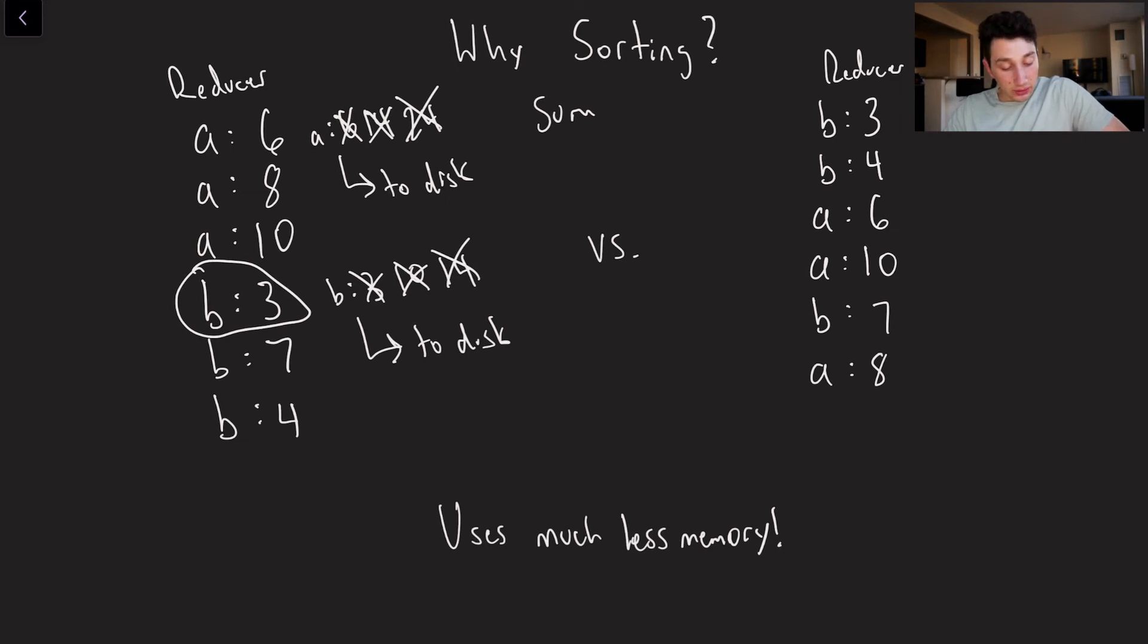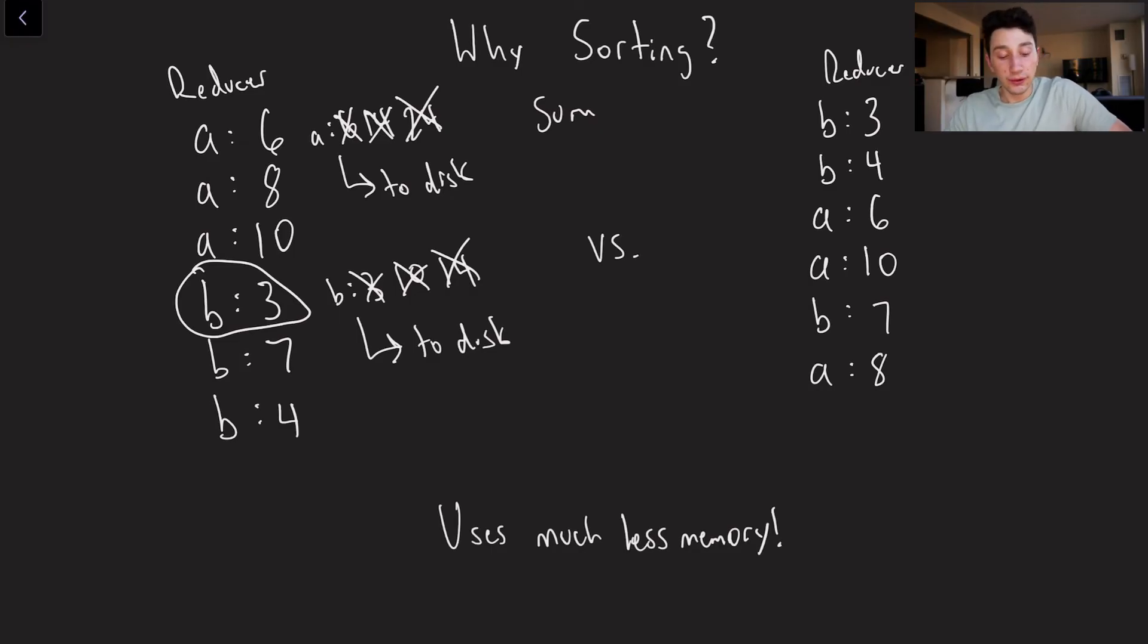If our data is not sorted, then we don't actually know when we've seen the end of a given key, and we don't know when we can flush to disk. So it would look something like this. B is 3. Now B is 7. Oh, wait.